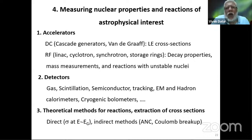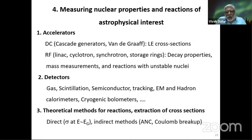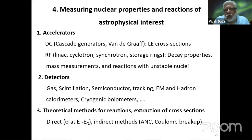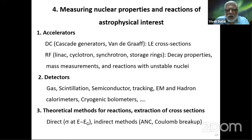I will start out by talking about how you measure some of the nuclear properties and reactions of astrophysical interest. When you do that, you require tools — both theoretical and experimental. The experimental tools consist of accelerators, because you want to produce these nuclei which you want to study, make reactions, and measure their masses, half-lives, cross-sections, and so forth. You also require detectors of various kinds. And then you want to interpret all of this using theoretical methods, both for reactions and for extracting the quantities of interest.